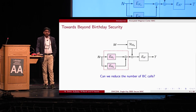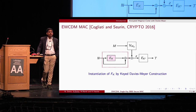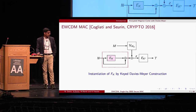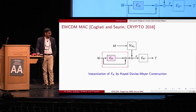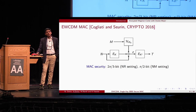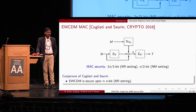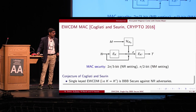However, this scheme requires three block cipher calls. At Crypto 2016, Cogliati and Seurin proposed EWCDM — Encrypted Wegman-Carter with Davies-Meyer MAC — a nonce-based MAC where F_K is instantiated by a keyed Davies-Meyer function. It gives 2n/3-bit MAC security in the nonce-respecting setting and n/2-bit security in the nonce-misuse setting, where n is the block size. In the same paper, the authors conjectured that EWCDM is secure up to n bits in the nonce-respecting setting, and that the single-key EWCDM is also beyond-birthday-bound secure against nonce-respecting adversaries.